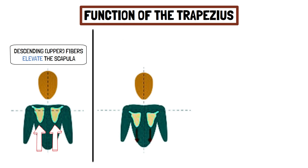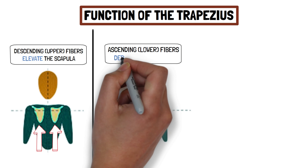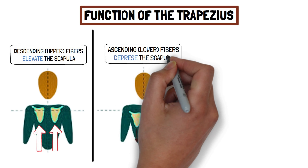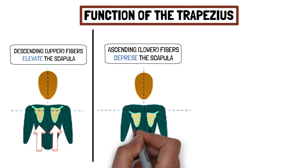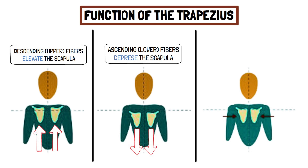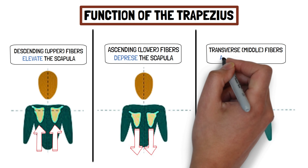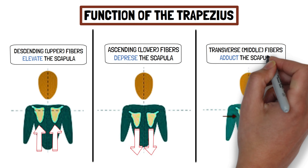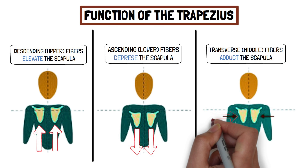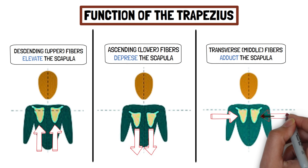The ascending fibers are responsible for depression of the medial part of the scapula and thus lowering the shoulder. The transverse fibers act together with the rhomboids to produce a retraction of the scapula by pulling it towards the midline.